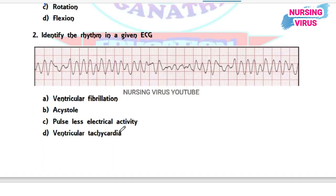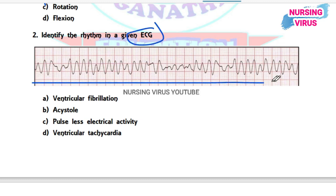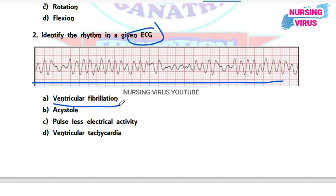Question 2: Identify the rhythm in the given ECG. The options are ventricular fibrillation, asystole, pulseless electrical activity, and ventricular tachycardia. In ventricular fibrillation there is no pulse with irregular beats visible on the ECG rhythm, so the correct option is ventricular fibrillation. In asystole, a straight line would be seen on the ECG.